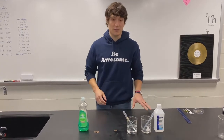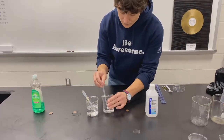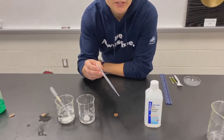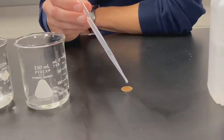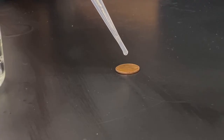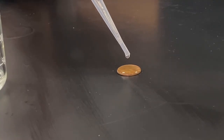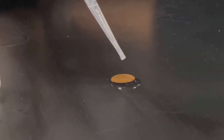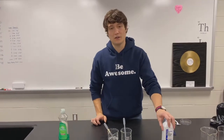Now my water is spreading out. Can you beat 36 with water? Give it a shot. All right, here's alcohol: one, two, three... twenty-three. So 22 drops until the surface tension broke with alcohol. So we have 22 for the alcohol and 36 for the water.